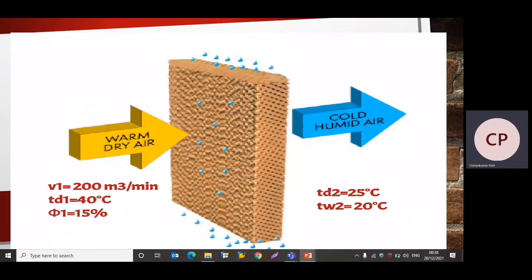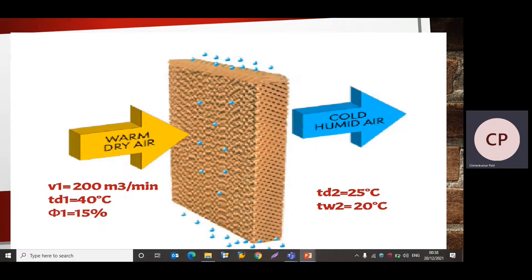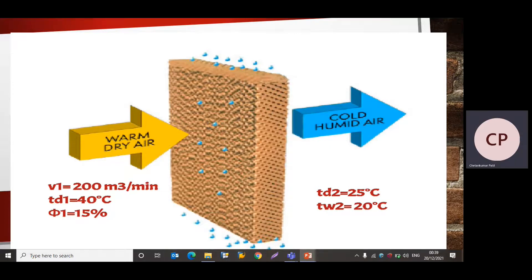Let us first understand this problem with the help of a diagram. The initial condition of air: volume V1 is 200 cubic meters per minute, dry bulb temperature Td1 is 40 degree Celsius, and relative humidity is 15%. The outlet condition: dry bulb temperature Td2 is 25 degree Celsius and wet bulb temperature Tw2 is 20 degree Celsius.